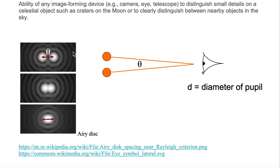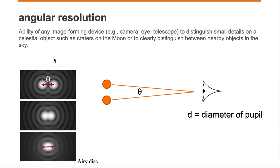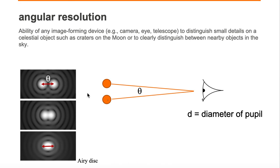So of the three images, the top image clearly resolves the two distinct objects, and that telescope would have the largest diameter, the largest aperture, to have the highest angular resolution of three telescopes.